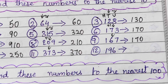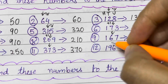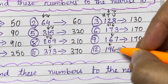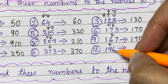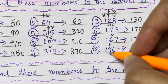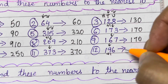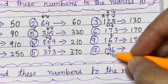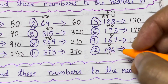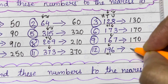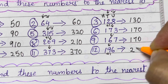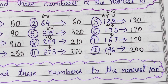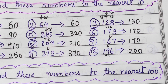196. The tens place is 9, and the digit after that is 6, which is more than 5. So you add plus 1. 9 plus 1 is 10, so there is a carry over. It becomes 2, 0, 0 — that is just 200.